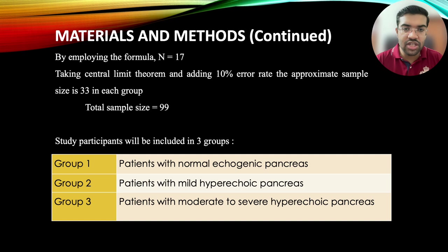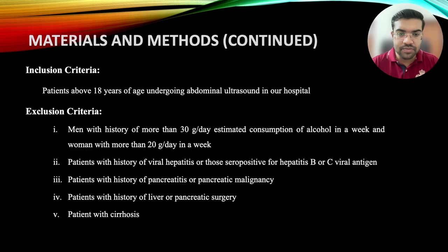Study participants were divided into three groups. Group 1 included patients with normal echogenic pancreas, Group 2 with mild hyperechoic, and Group 3 with moderate to severe hyperechoic pancreas.